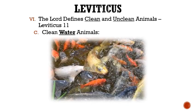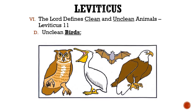Letter C: The clean water animals. In order for an animal to be considered clean out of the water, it must have both fins and scales. Letter D: The unclean birds are listed. Some of these birds considered unclean were the eagle, the osprey, vulture, hawk, raven, owl, swan, pelican, stork, and even the bat.